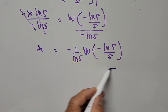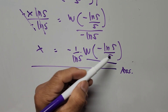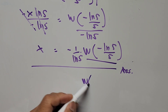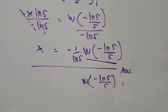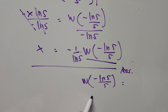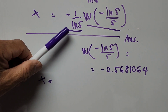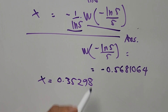We can consider this as our answer, but if we want the decimal form, we need to find the value of W of negative ln of 5 divided by 5. We refer to Wolfram Alpha, entering the product log of negative ln of 5 divided by 5. The value is approximately 0.5681064. Multiplying this by negative 1 over ln of 5, x is approximately 0.35298.